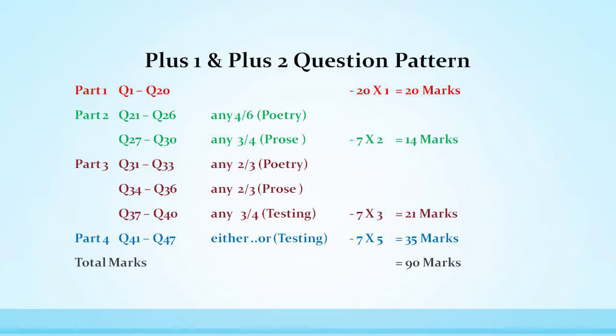Part 3, question 31 to 33, 34 to 36, 37 to 40. Questions 31 to 33 are poetry where you answer 2 out of 3. Questions 34 to 36 are short answer from prose, 2 out of 3. Questions 37 to 40, any 3 out of 4 is a testing question. Each question carries 3 marks, therefore totally 21 marks.